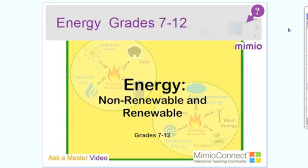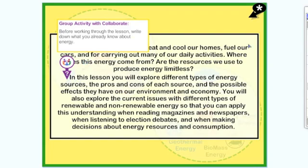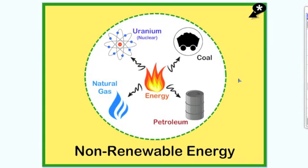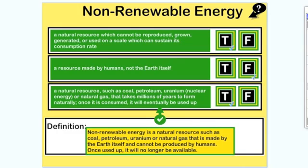The 7-12 unit is on renewable and non-renewable energy. This is a very comprehensive lesson that discusses the different types of energy and how energy is used to cool and heat our homes, fuel our cars, and again there are some collaboration ideas — students brainstorm what they already know about energy. Non-renewable energy is discussed, including uranium, coal, petroleum, and natural gas. A definition of non-renewable energy is generated by students deciding whether a statement is true or false, and once they have all of these, it generates the definition of non-renewable energy.